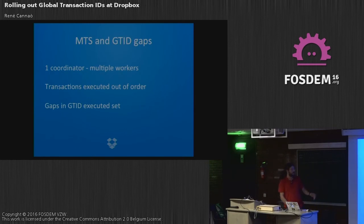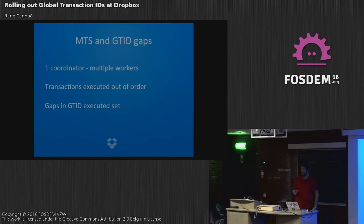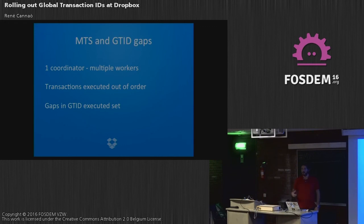Another issue occurred when using GTID with multi-threaded slaves: we saw gaps in the executed GTID set. The reason was that when one worker thread was slower than the others, certain GTIDs would temporarily appear missing from the executed GTID set. However, within a fraction of a second the gap would disappear as the worker caught up. That's all.